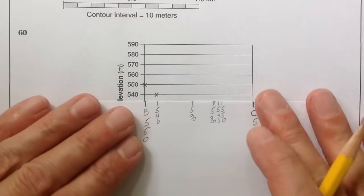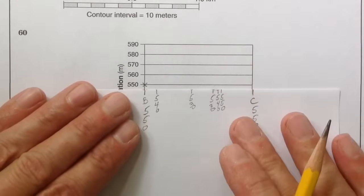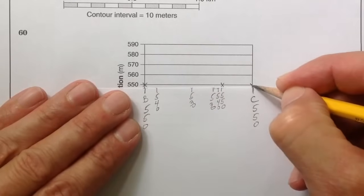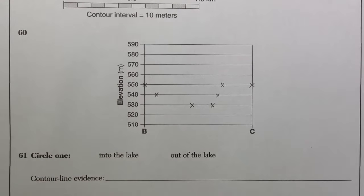And then the next one is 540 so I slide it back up. Next one is 550 right there. And then C is also 550. So now you have a bunch of X's that you've transferred over to your grid here.